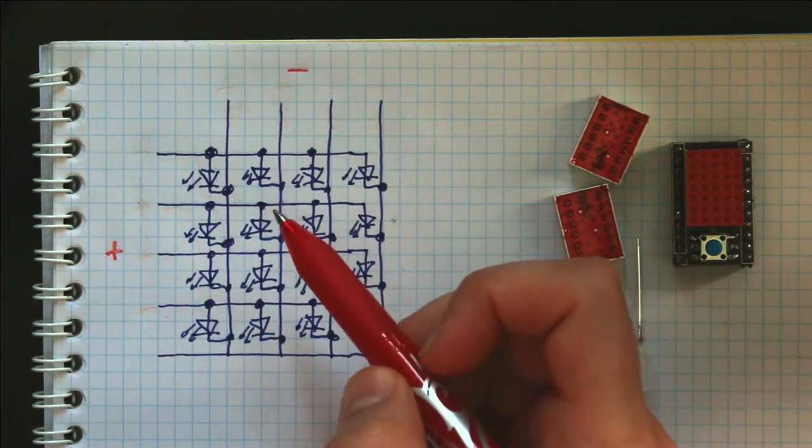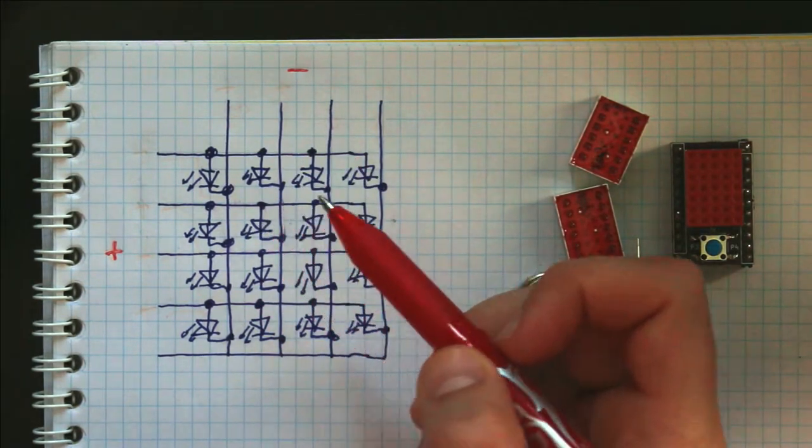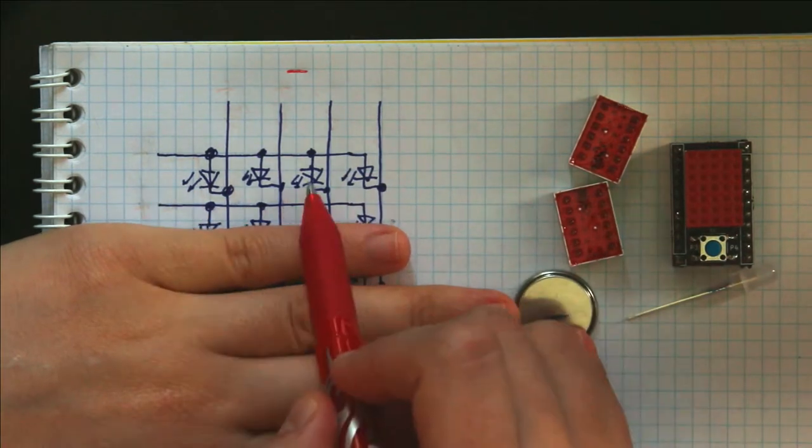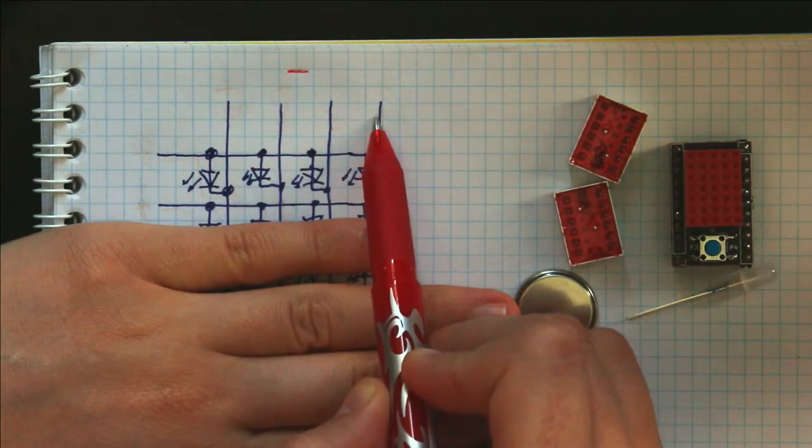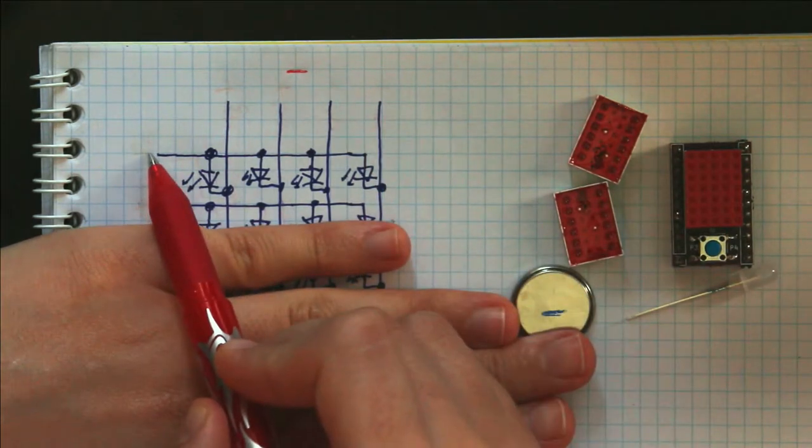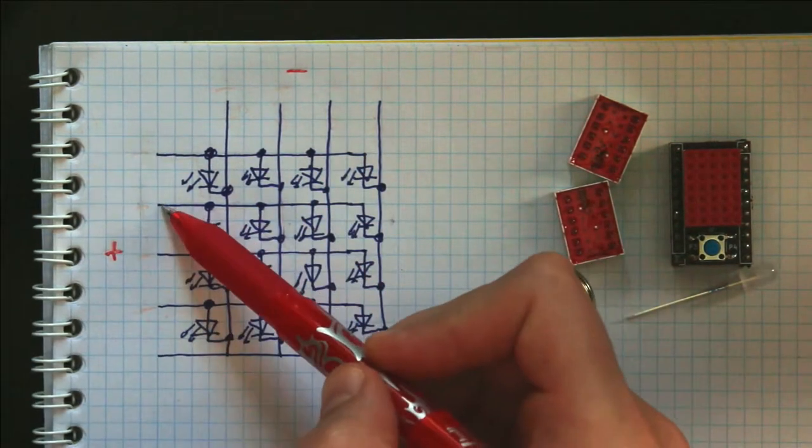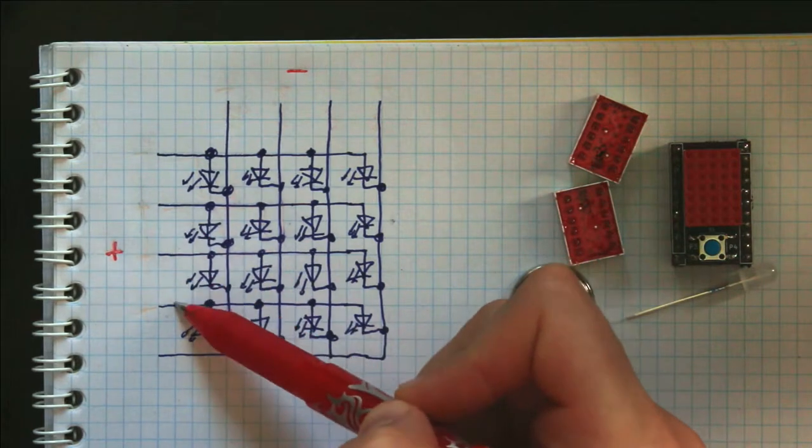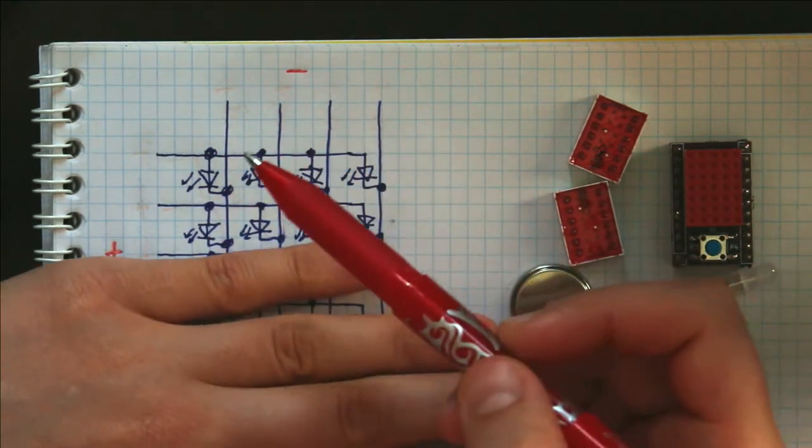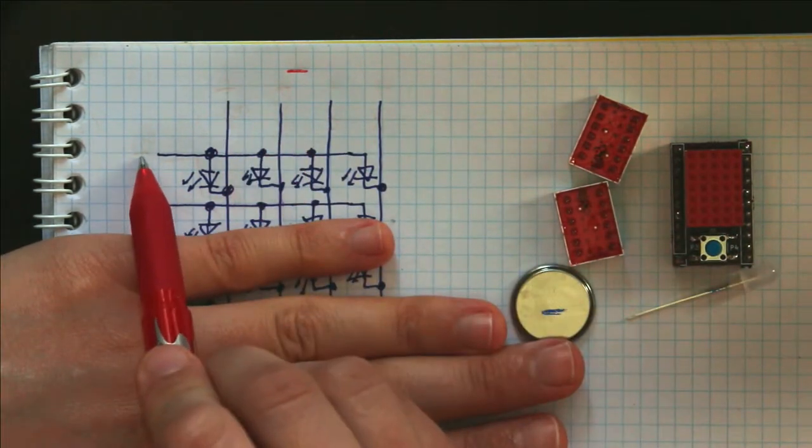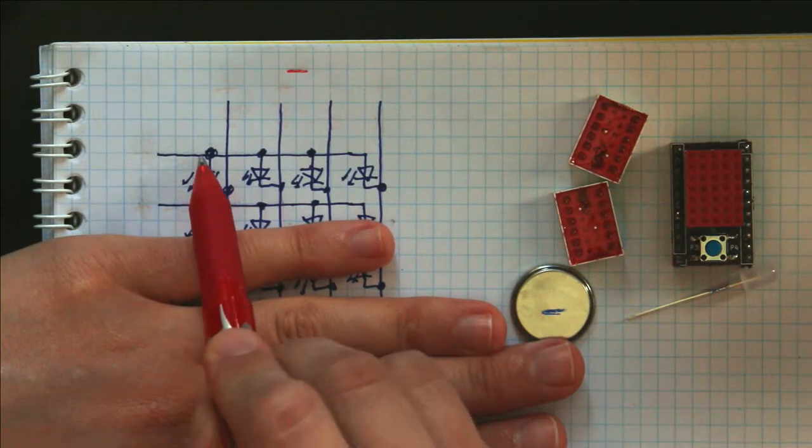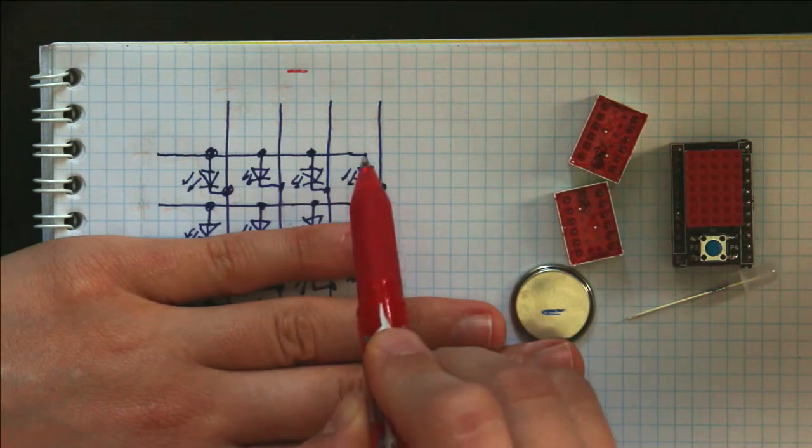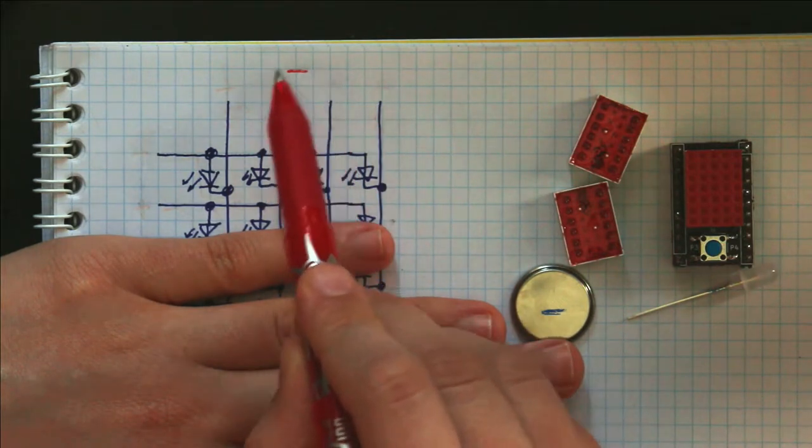However, if we only wanted, for example, this row to turn on, we would set all of these pins to negative and this pin only to positive, while leaving these all either disconnected or negative. That would allow the current to flow from this positive through each one of these LEDs to the negative side.